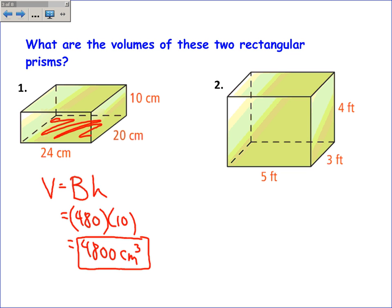Now our units are centimeters cubed, and what that means is how many one centimeter by one centimeter by one centimeter cubes fill up this entire rectangular prism. In this case it happens to be 4,800 of those cubic centimeters will fill up that space exactly.